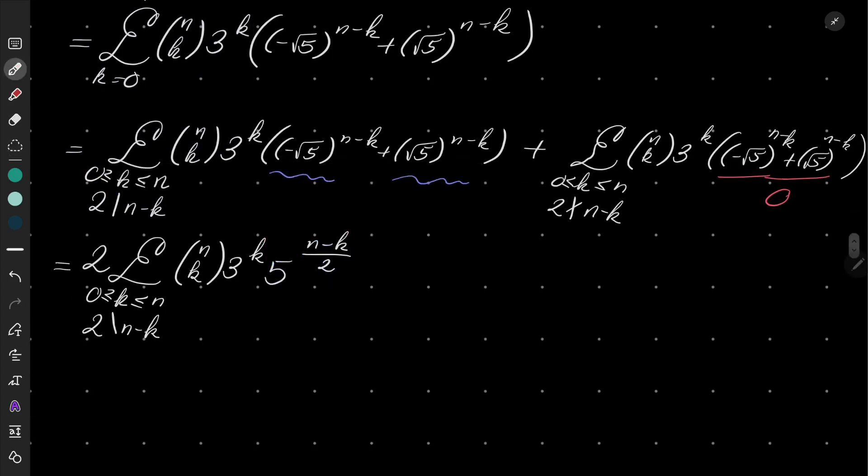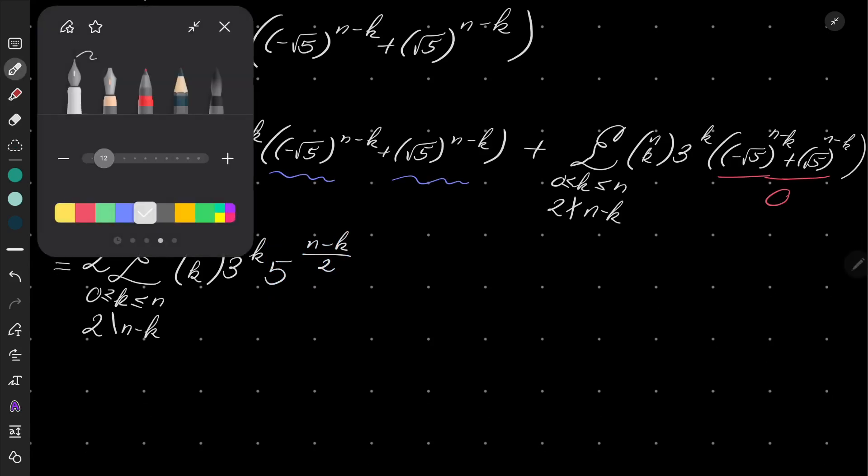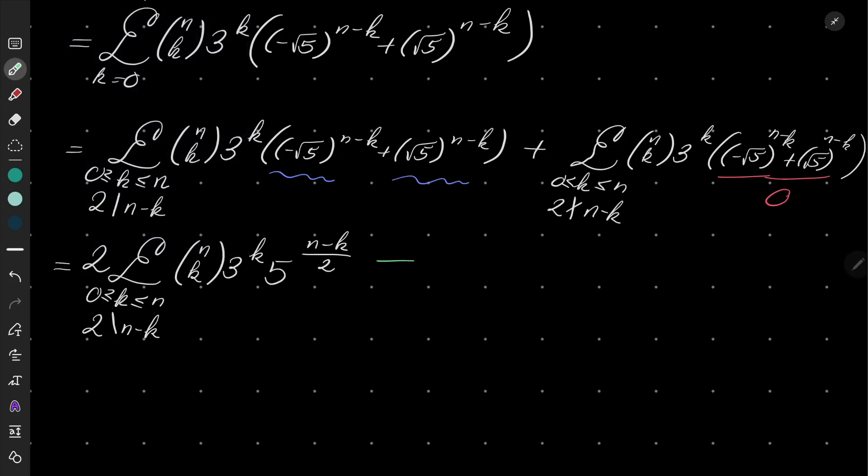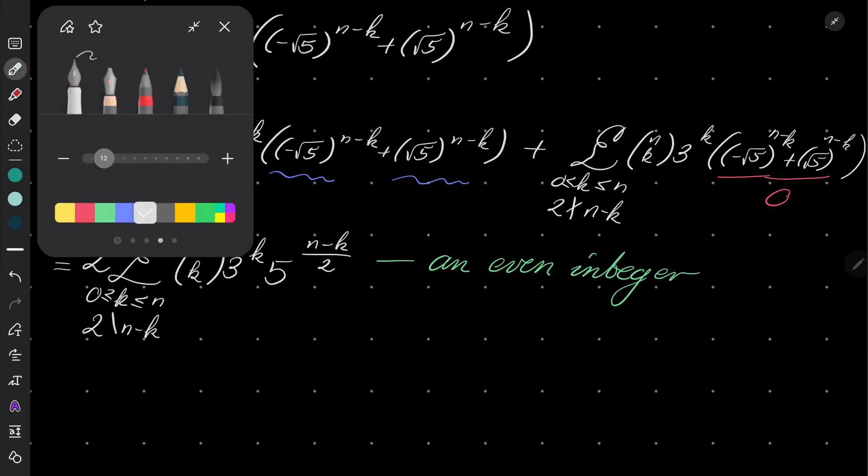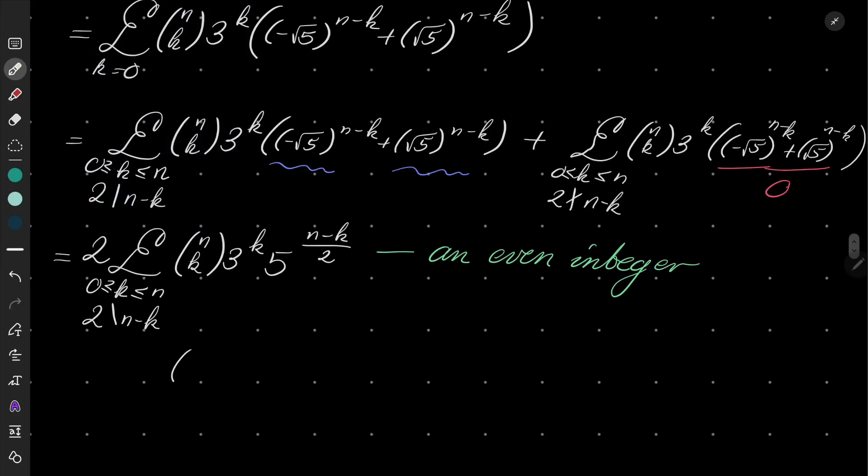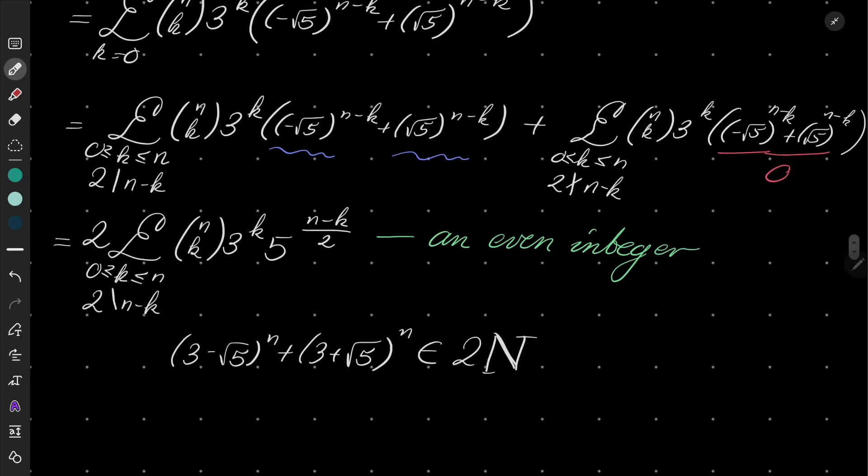And in fact we see two things. First of all, this number is integral. Moreover, it is even. Very important. So (3 - √5)^n + (3 + √5)^n is in 2 times the natural numbers, yes, positive natural numbers.